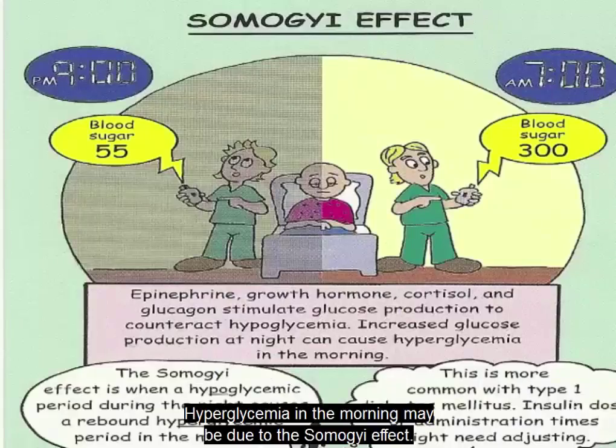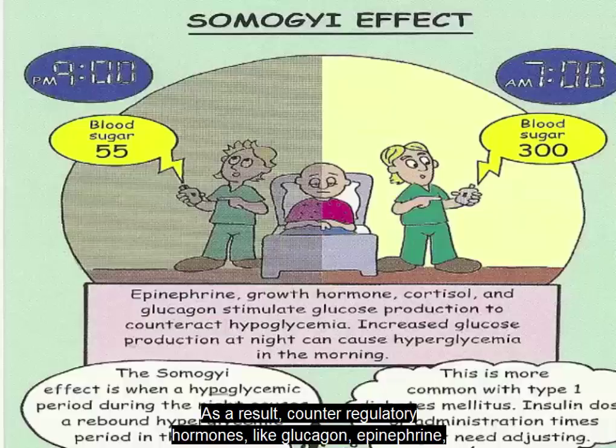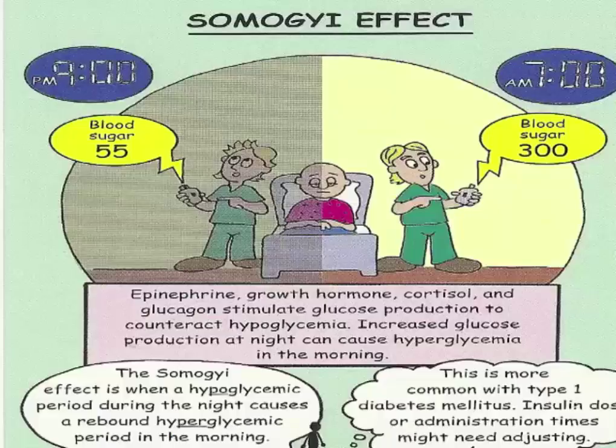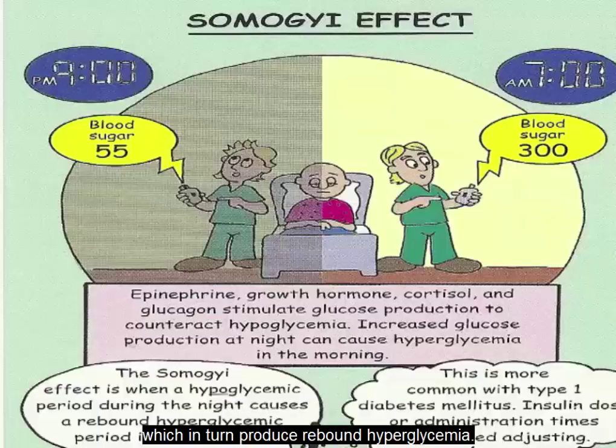Hyperglycemia in the morning may be due to the Somogyi effect. A high dose of insulin produces a decline in blood glucose levels during the night. As a result, counter-regulatory hormones like glucagon, epinephrine, growth hormone, and cortisol are released. This stimulates lipolysis, gluconeogenesis, and glycogenolysis, which in turn produce rebound hyperglycemia.